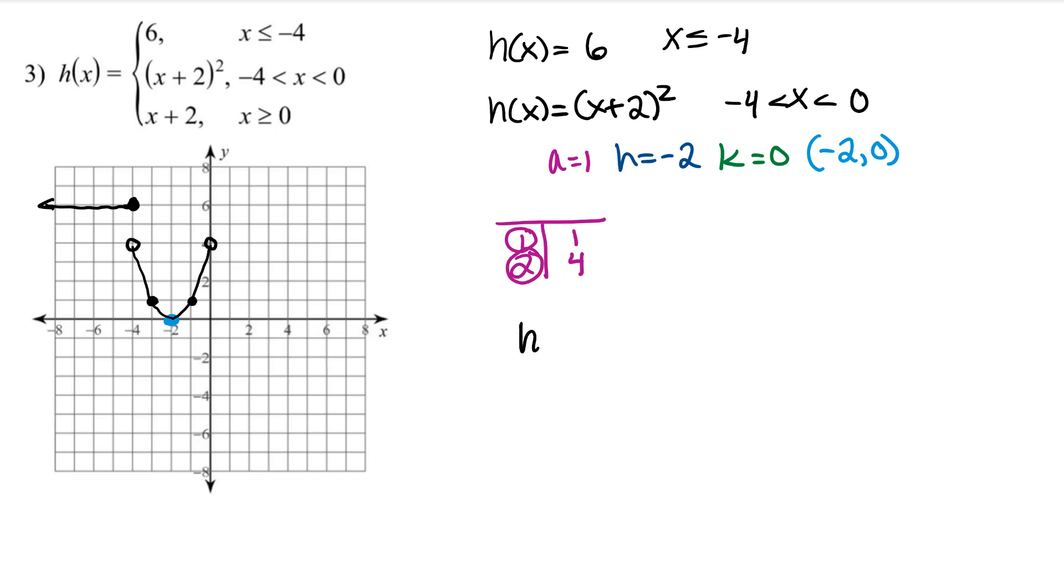Our last piece is a line in y equals mx plus b form. So our slope is 1 and our y-intercept is 2. For this interval of x's, the y value at x equals 0 is defined, and that's graphing piecewise functions with quadratic, linear, and constants.